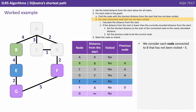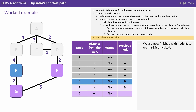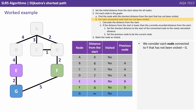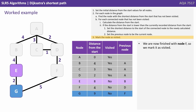We consider each node connected to B that has not been visited — that's just E. The distance from the start equals B's distance plus the edge weight: 4 plus 4 equals 8. Since 8 is less than infinity, we update node E's distance from the start. We're now finished with node B, so we mark it as visited. Next we find node F with a distance of 4. We consider each node connected to F not yet visited — that's just G. F's distance plus edge weight: 4 plus 5 is 9, which is less than infinity, so we update G's distance from the start. We mark F as visited.